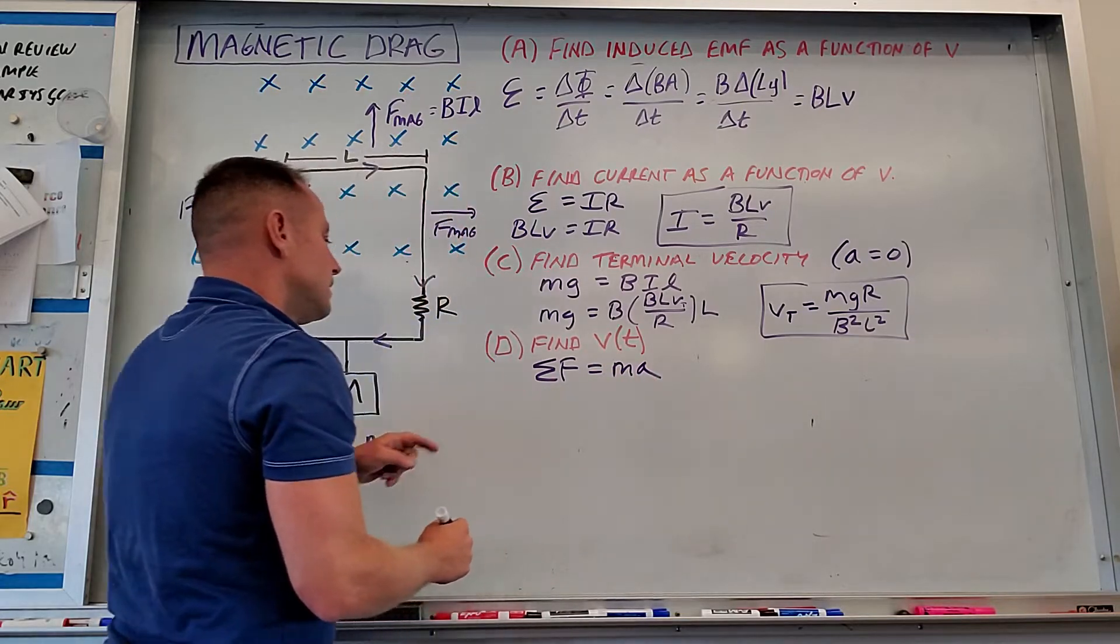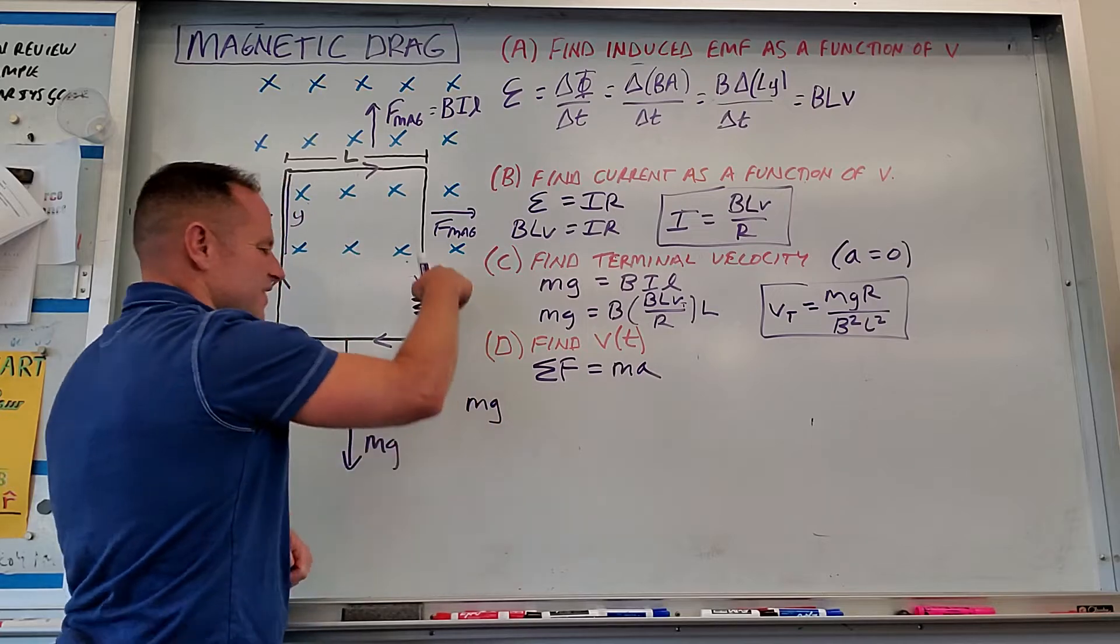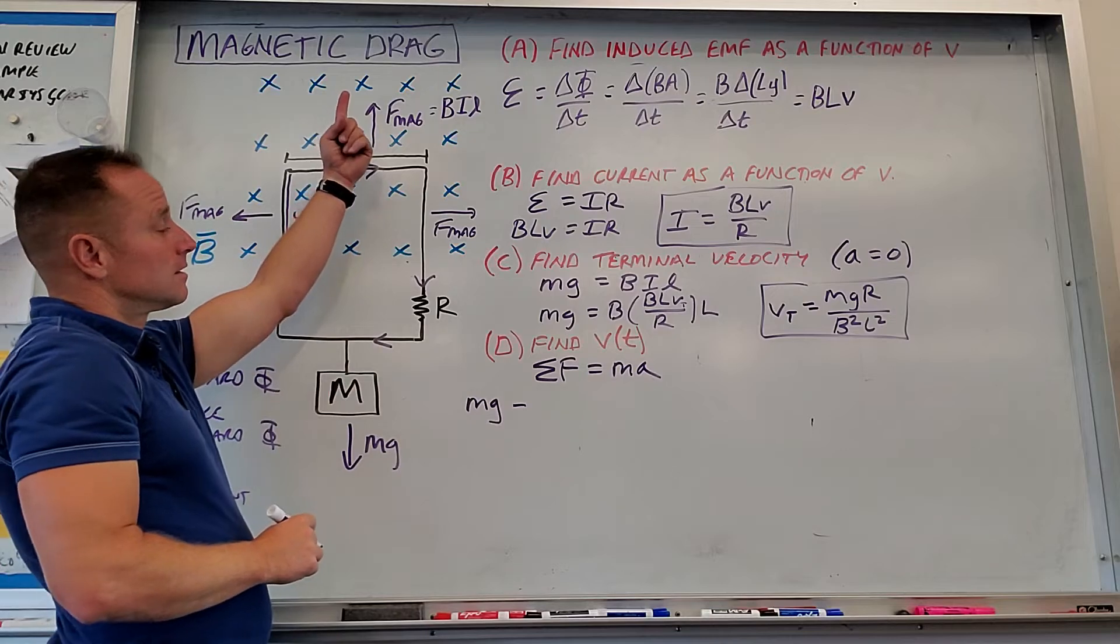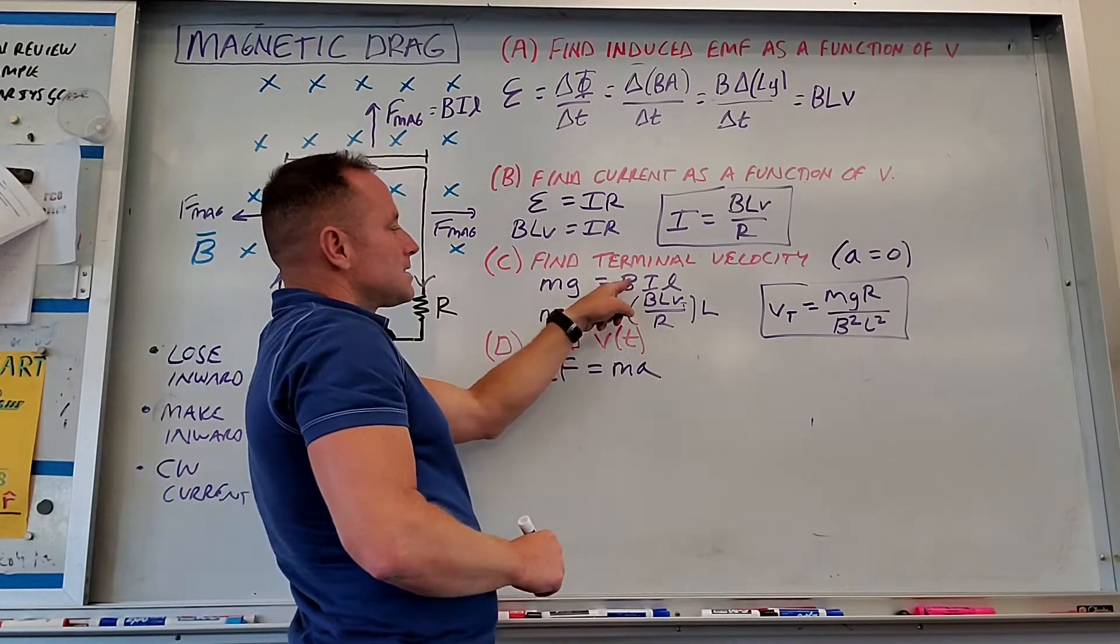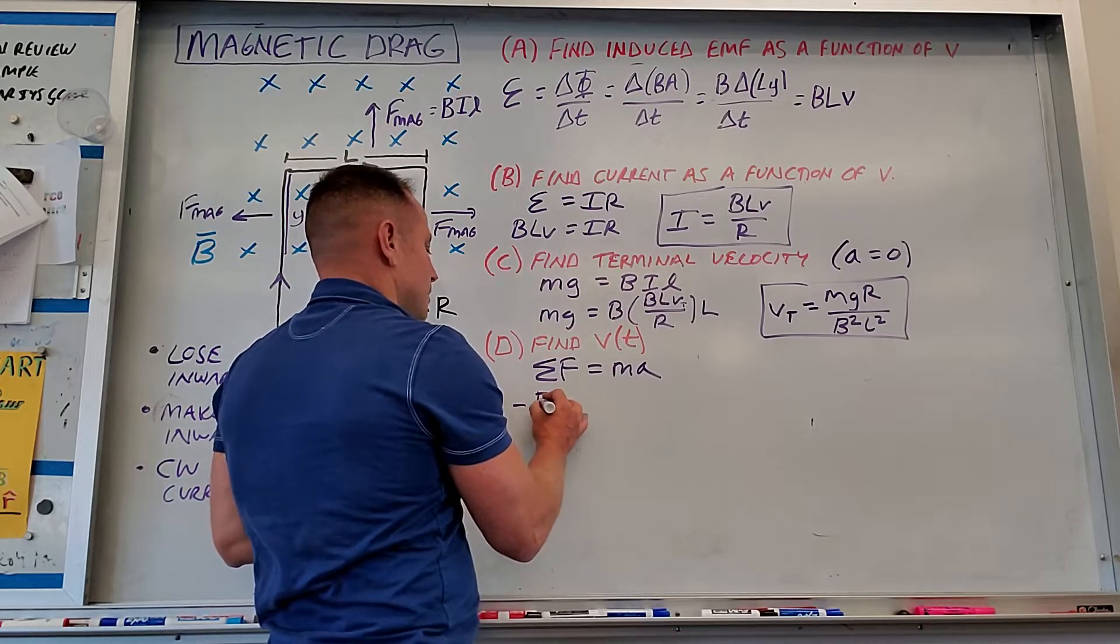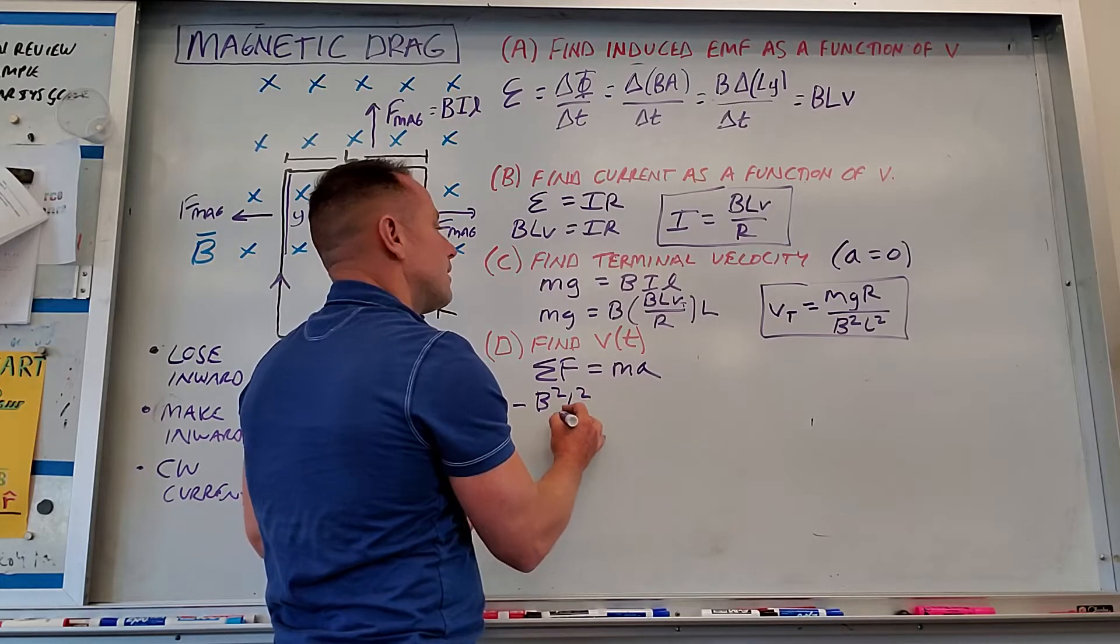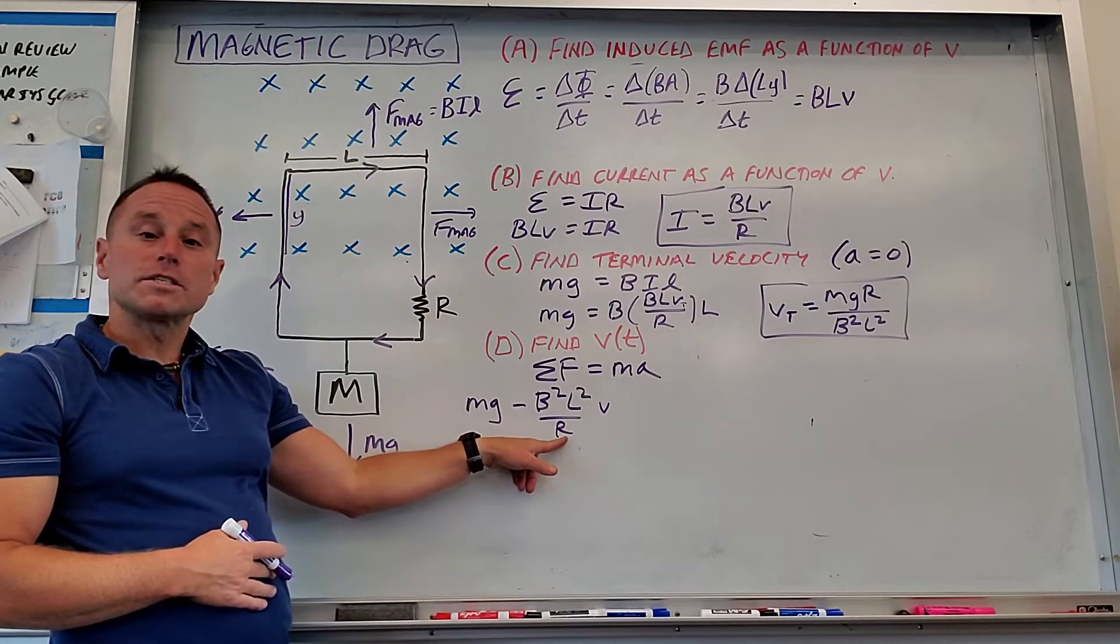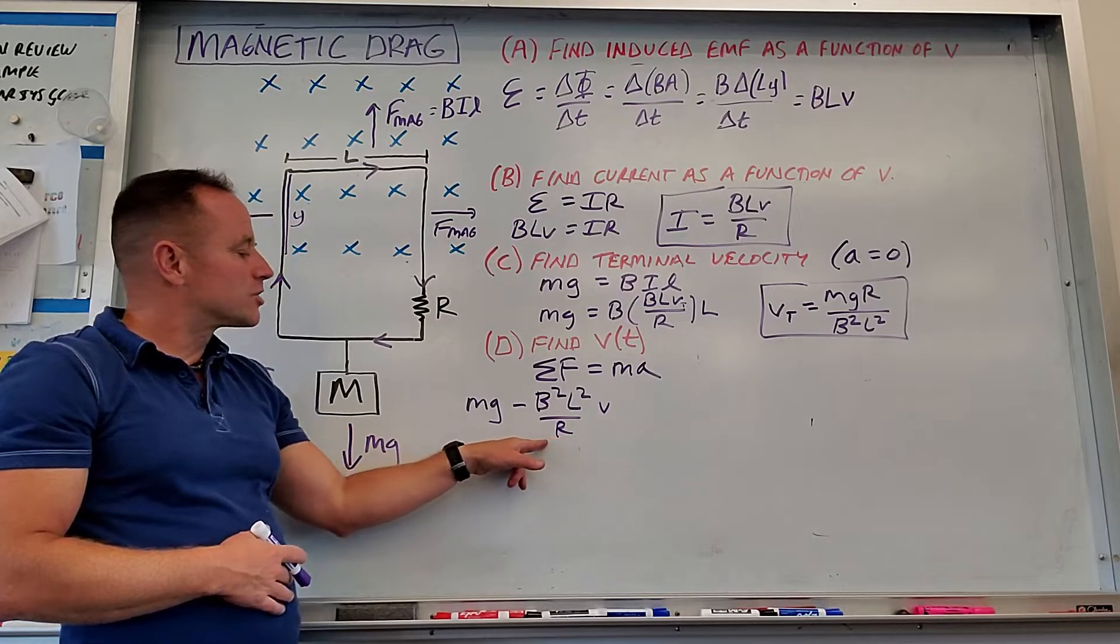So the force, net force, is going to be mg down. We'll call this the positive direction. That's which way it's going. Minus the magnetic force, which is BIL. We can just substitute what we have. B squared L squared over R times V. So your magnetic force is going to be velocity dependent. Notice it's acting just like air drag. Air drag, linear air drag, we represent as like lowercase b drag coefficient times V. This B squared L squared over R is acting like a linear drag coefficient.